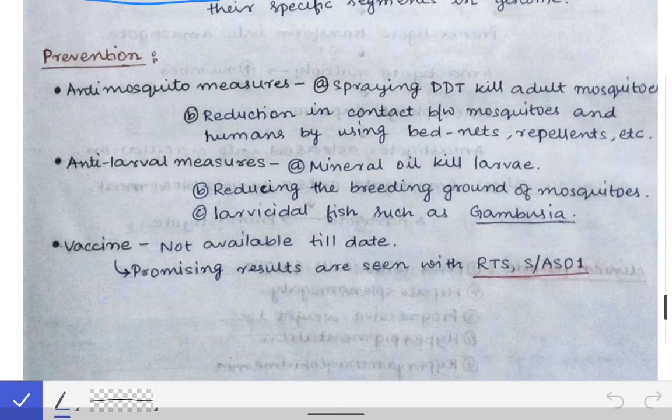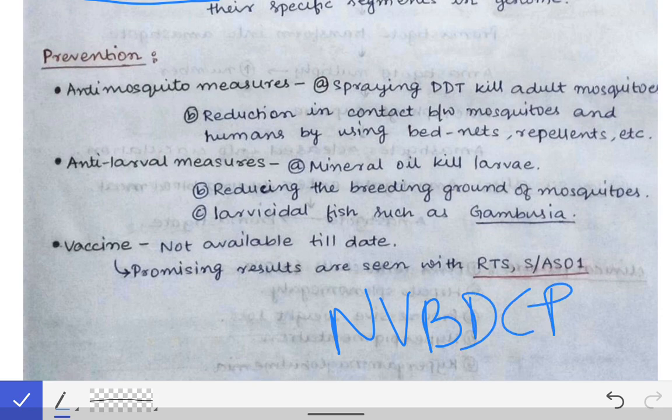Prevention and control of malaria is done under the National Vector Borne Disease Control Program (NVBDCP). Under this program, six diseases are covered: malaria, chikungunya, dengue, filaria, Japanese encephalitis, and kala-azar.